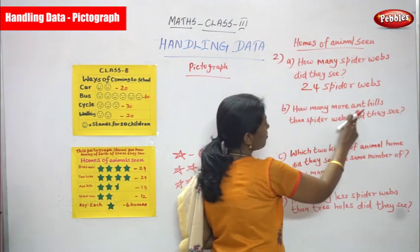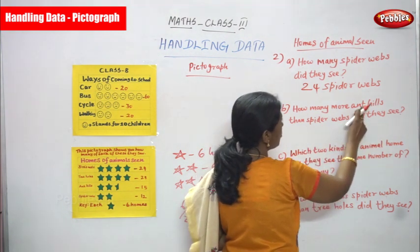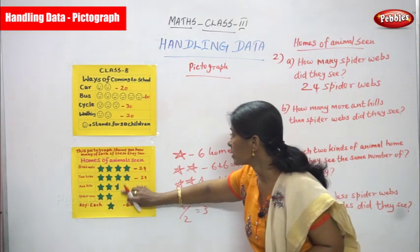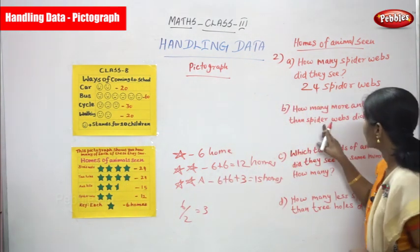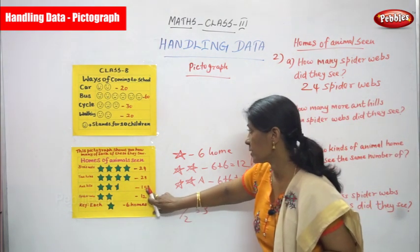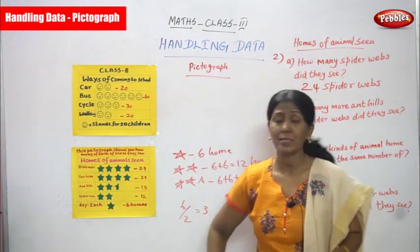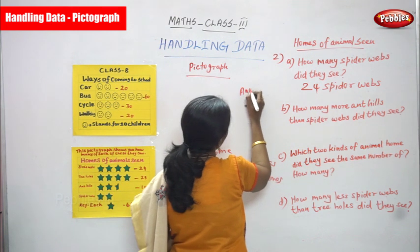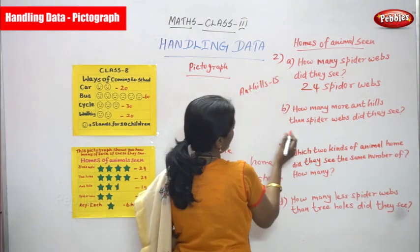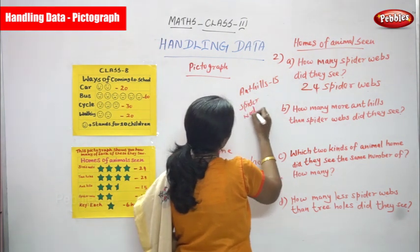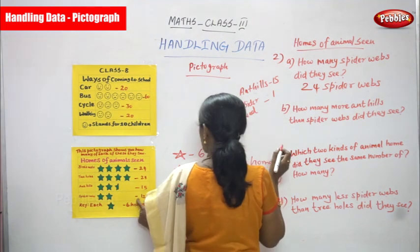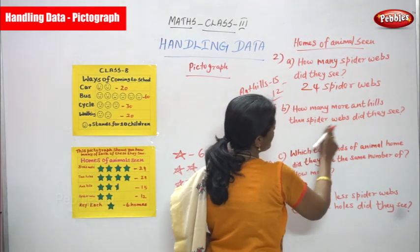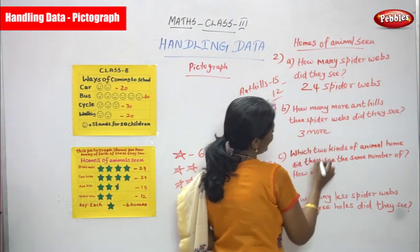Second question: how many more ant hills than spider webs did they see? Spider webs is twelve, and ant hills is fifteen. So fifteen minus twelve equals three. The answer is three more ant hills than spider webs.